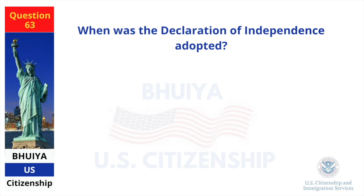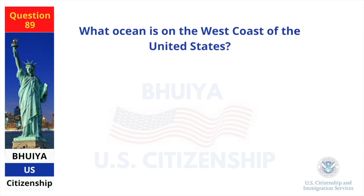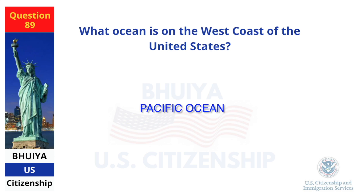When was the Declaration of Independence adopted? July 4, 1776. What ocean is on the west coast of the United States? Pacific Ocean.